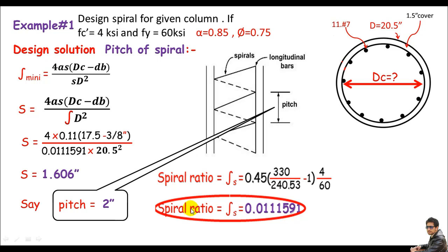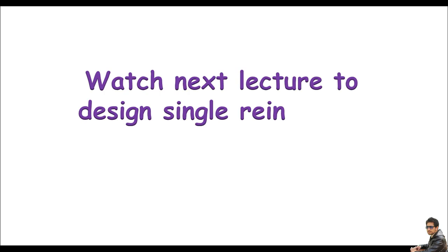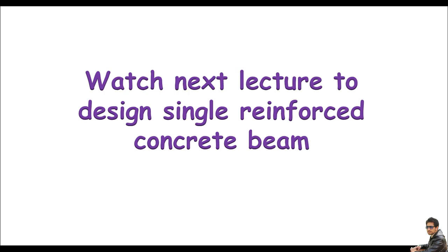So use pitch s = 2 inches. According to ACI 318, clear spacing must be between 1 and 3 inches, and this value is within that range, so we are okay. This completes the spiral design for this spiral column. Watch the next lecture to design a singly reinforced concrete beam. See you next time! Wassalam.